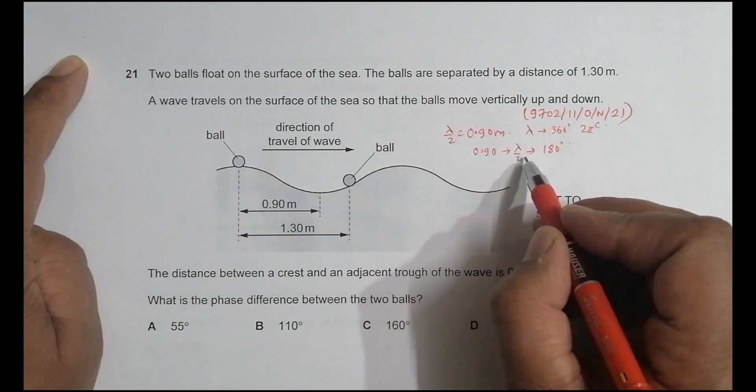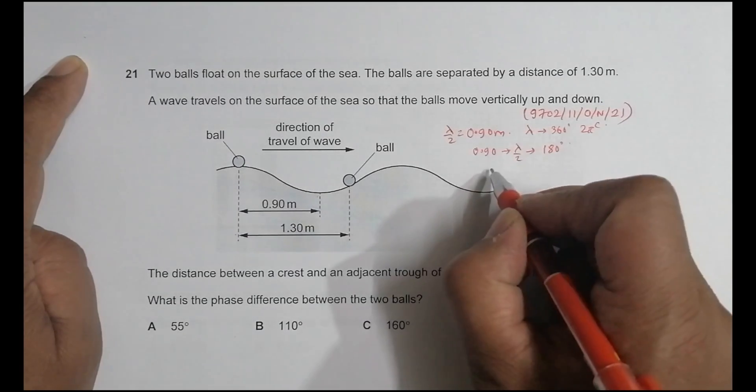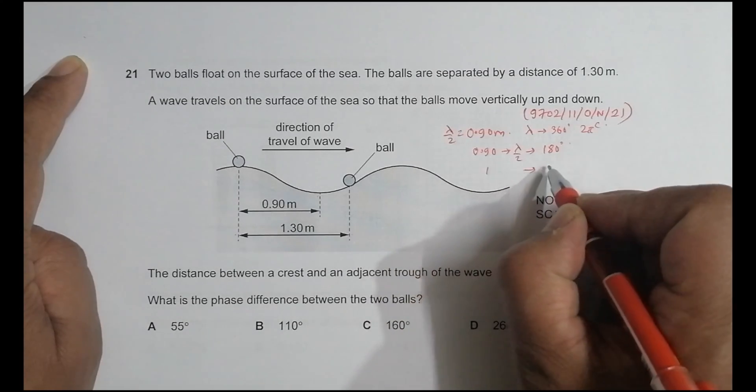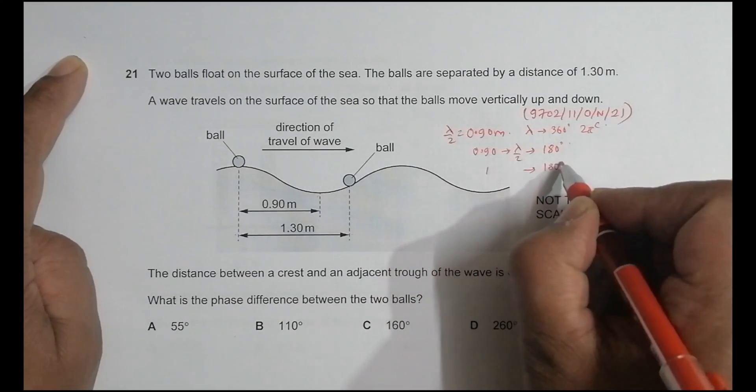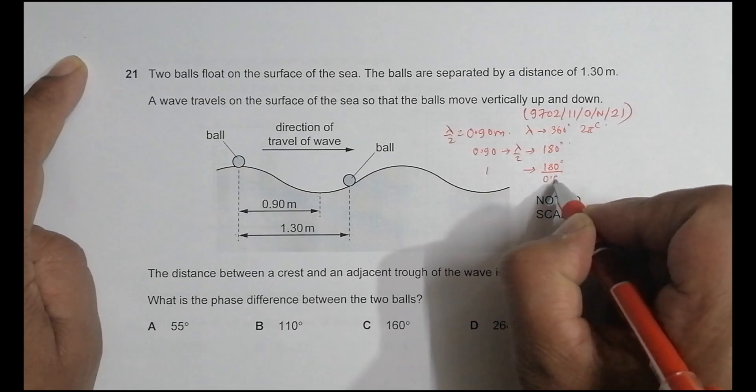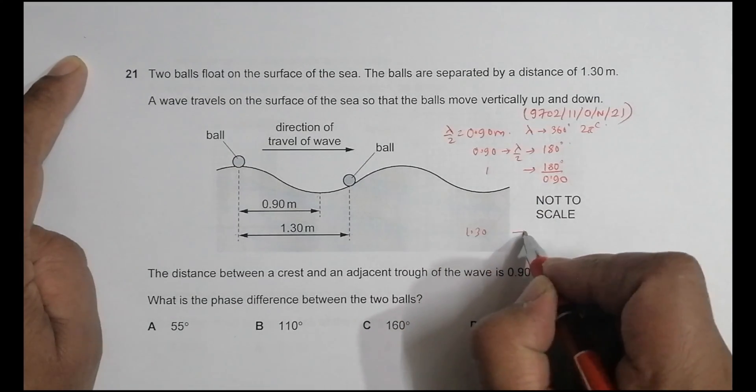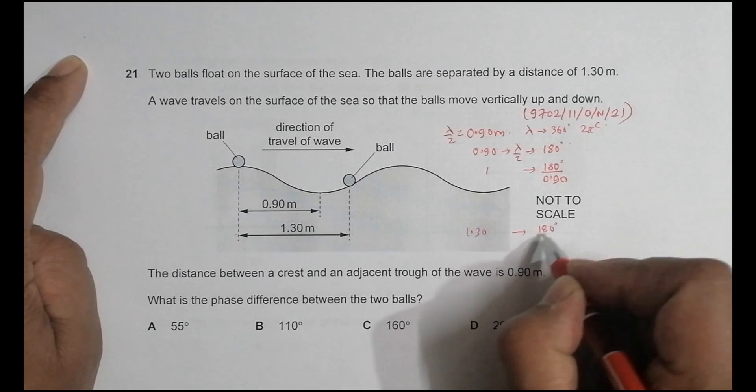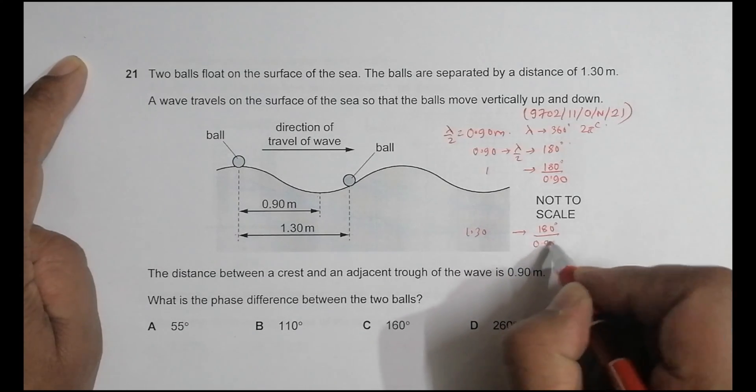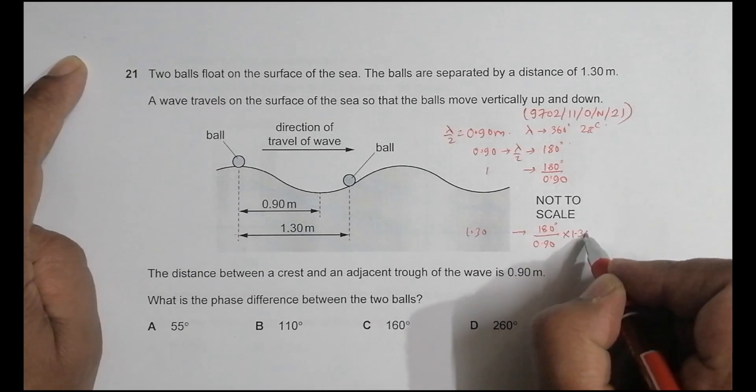0.90 means phase difference of 180 degrees. So that means phase difference of 180 degrees by 0.90. That means 1.30 means it should be 180 degrees by 0.90 into 1.30.